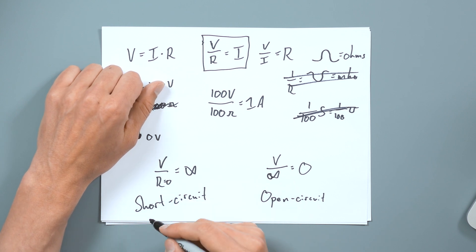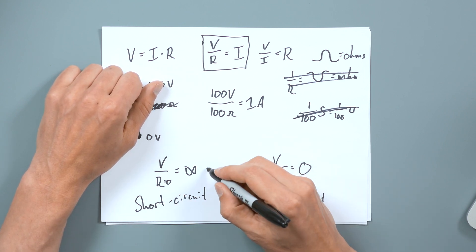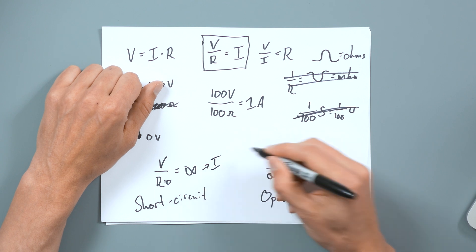But at least you know from there being a complete lack of current, that is an open circuit. So those are the two extreme cases of Ohm's law when resistance is zero, and when resistance is infinity, and how that affects your current i.